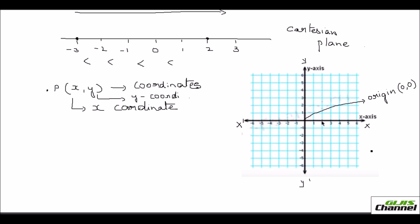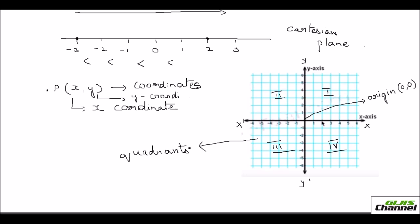The vertical and horizontal lines — the x axis and y axis — divide the plane into four parts, each called a quadrant. This is the first quadrant, this is the second, here is the third, and here is the fourth quadrant on the x, y plane.